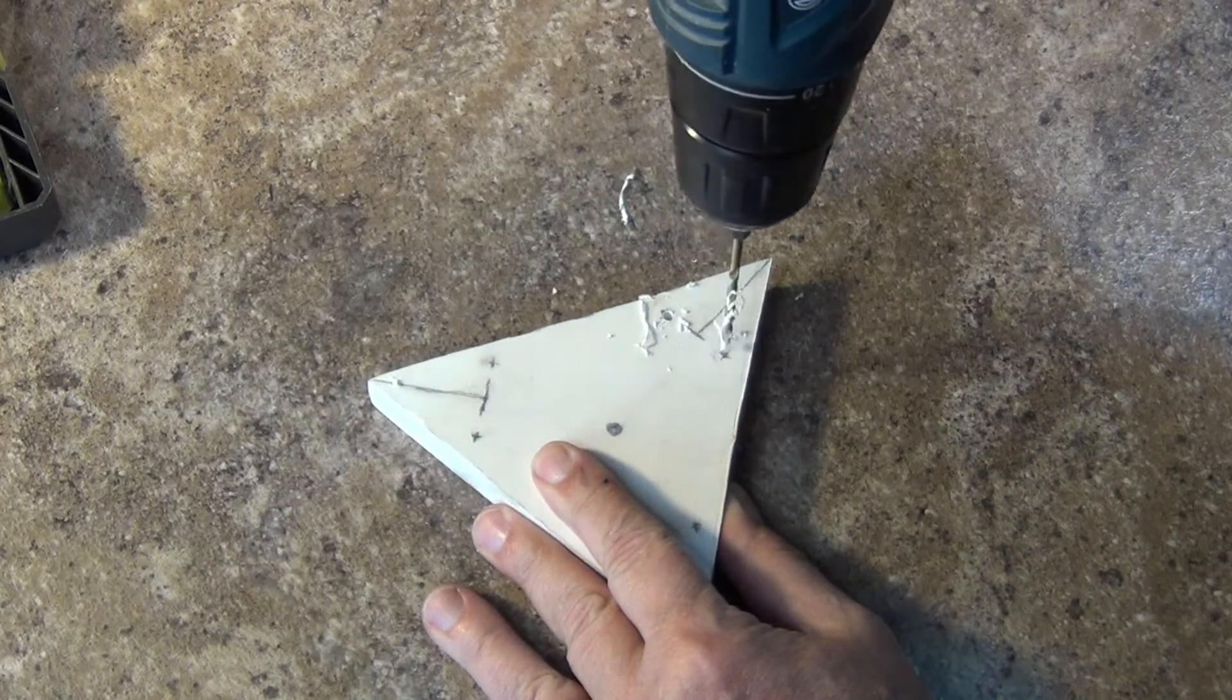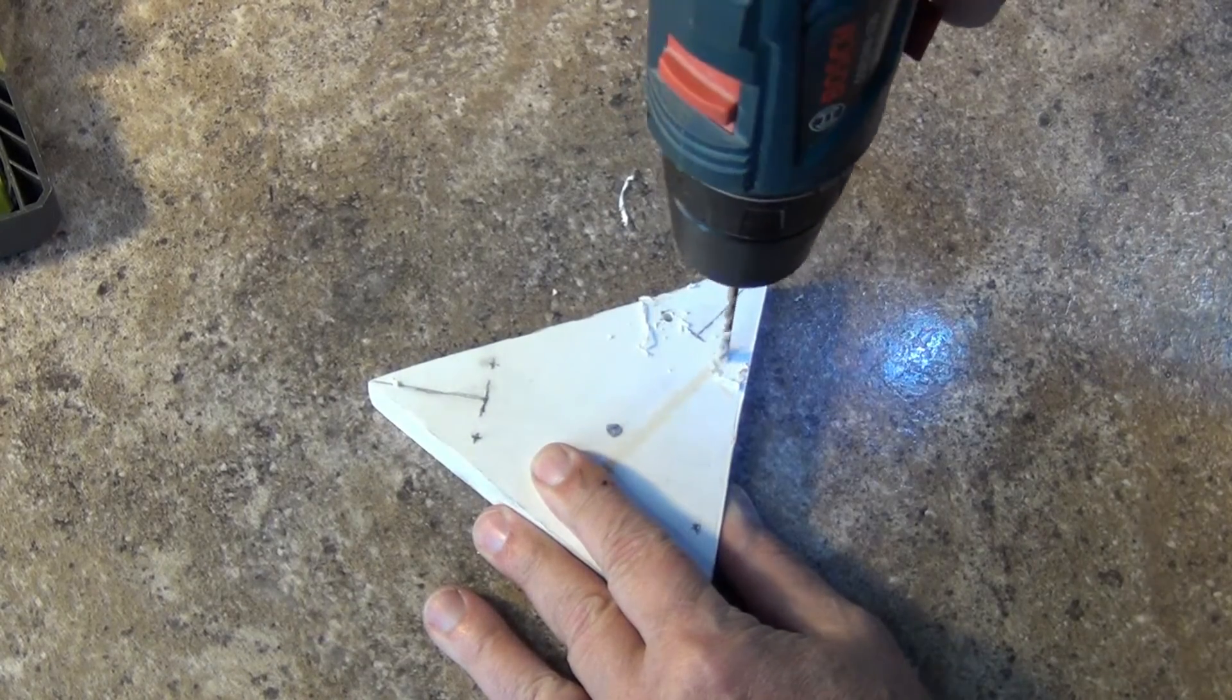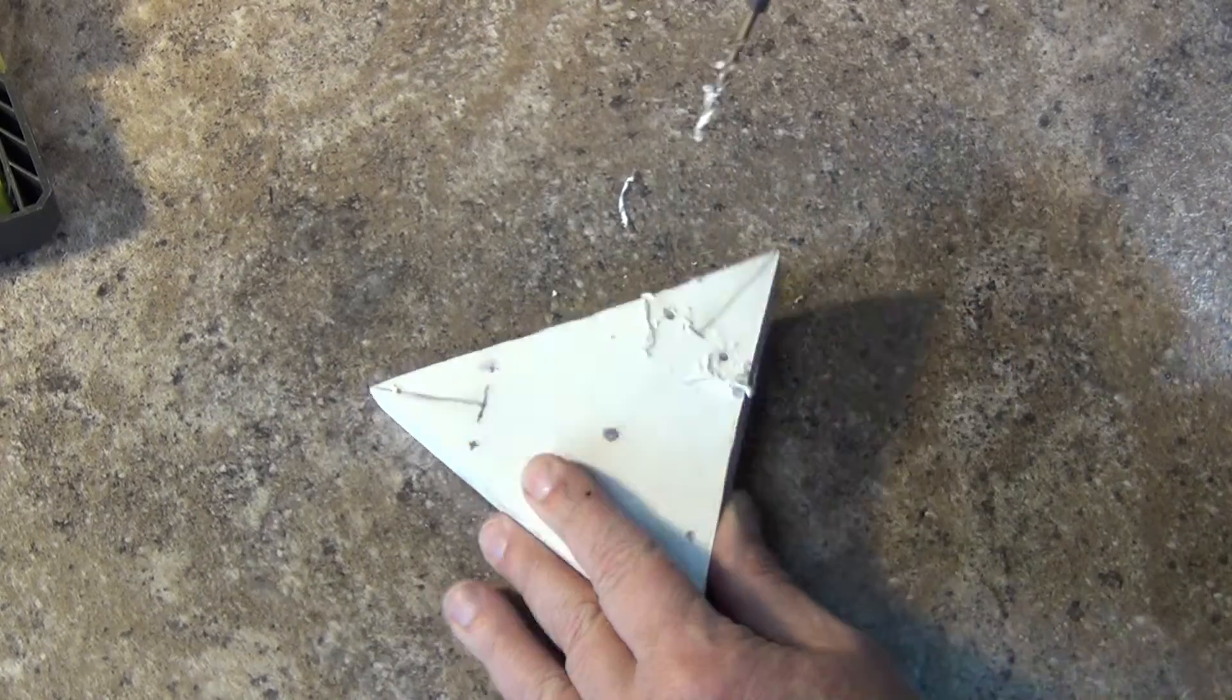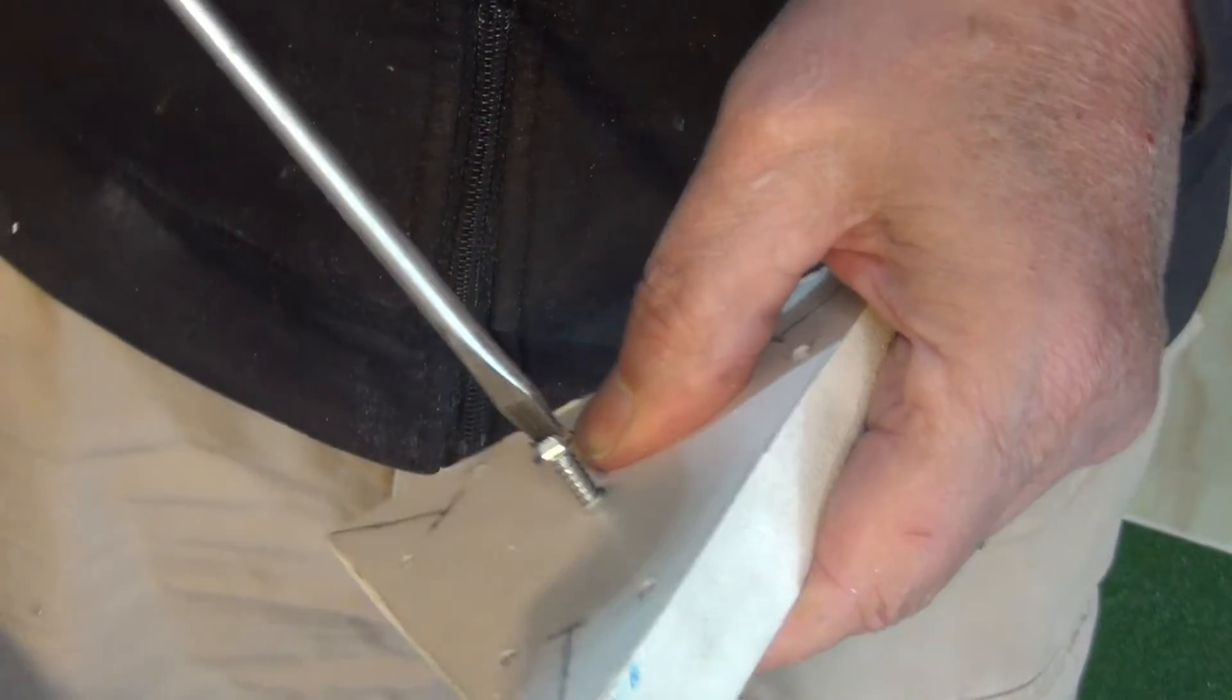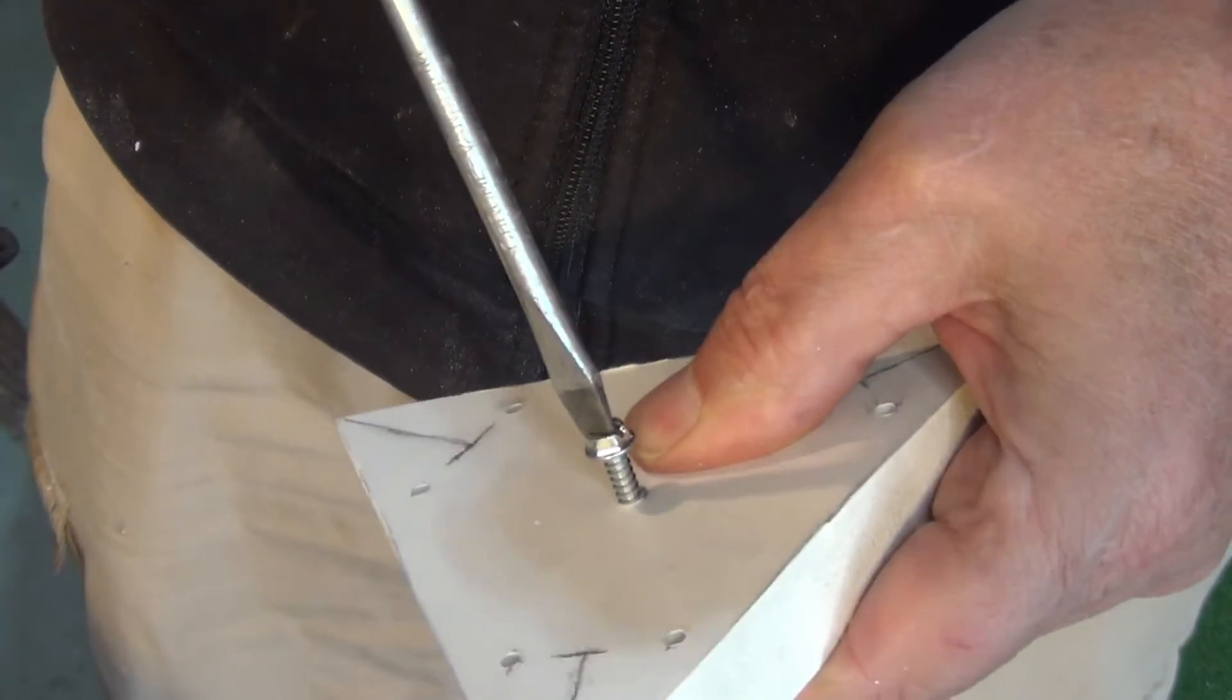Using a 1 eighth inch drill bit, I drill 6 pilot holes about a quarter of an inch deep into the board. I also drill out the center mark, boring all the way through to the other side. I screw the 1 and 1 half inch screw into the hole.